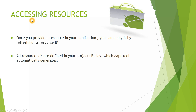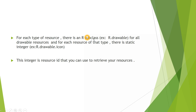Next, we'll see how to access these resources. Every resource in your application will have a unique ID. Once you provide a resource, you can access it using its resource ID. All resources are identified in your project's R class, which the APT tool automatically generates when your application is compiled. For each type of resource there is an R subclass — for example, there is an R subclass called drawable.